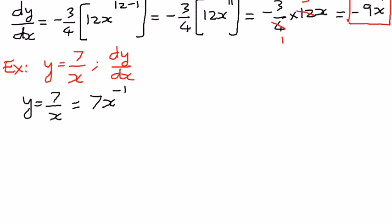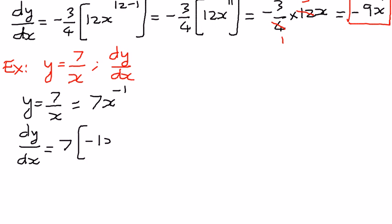Now, 7 is a constant term, and for x to the power of negative 1, we can use the power rule to differentiate it. So dy by dx is going to be equal to 7 times n, which equals negative 1, times x to the power of n minus 1, that is negative 1 minus 1. When we simplify this, this is going to be 7 times negative 1, which is negative 7, times x to the power of negative 1 plus negative 1, which is negative 2.